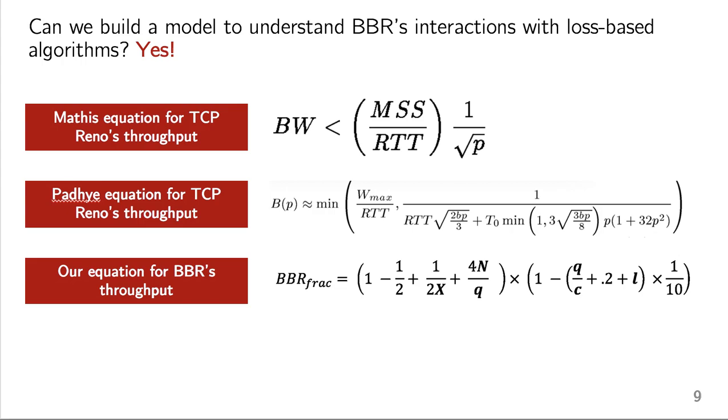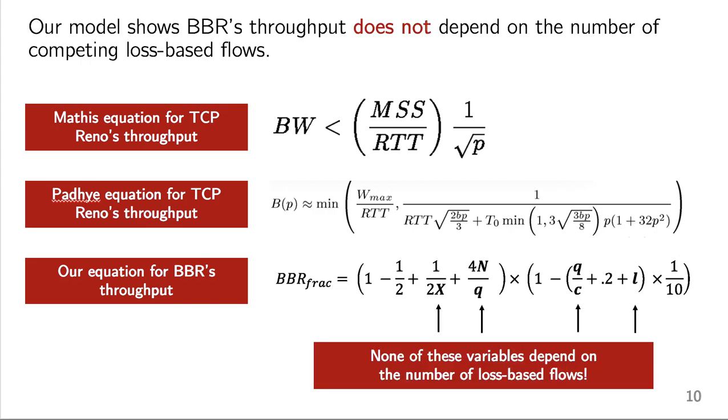At the bottom here of the slide, I'm showing you our robust model for BBR's fraction of the link and throughput when it's competing with loss-based flows. Now this formula looks somewhat complicated, but really what I want you to draw your attention to here is that none of these variables depend on the number of loss-based flows. So, that is why we see unfairness in the previous results I showed you. So in order to understand what's going on here, let's begin by talking about how BBR works, so then we can understand how we build the model.